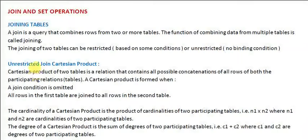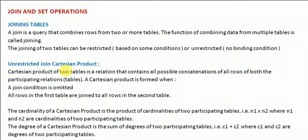An unrestricted join is called a Cartesian product. A Cartesian product of two tables is a relation that combines all possible concatenations of all rows of both the participating relations. This means a row from one table will combine with each and every row of the second table.